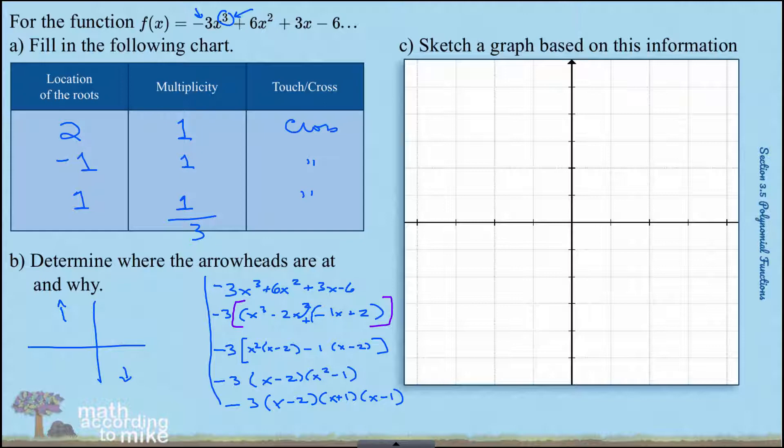So when we go to graph this thing, we have an arrowhead somewhere up here, we have an arrowhead somewhere down here. We have a root at 2, a negative 1, and positive 1.